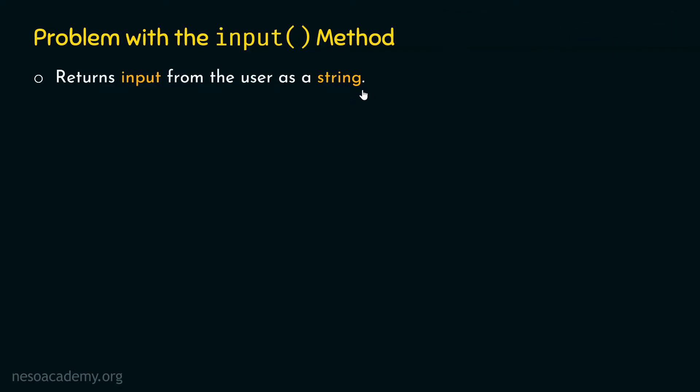That's a big problem because if we are interested in receiving multiple inputs from the user and want to store them as individual list items, we won't be able to do so — Python will treat the entire input received from the user as a string. To better understand this, let's consider one example.